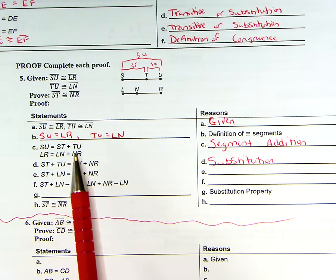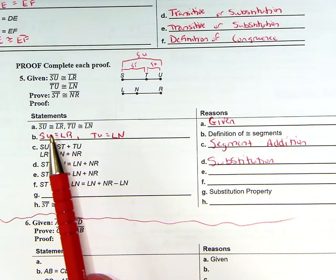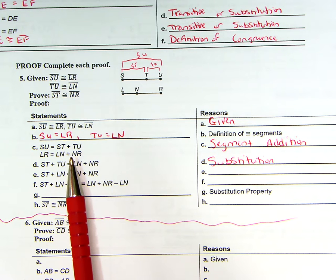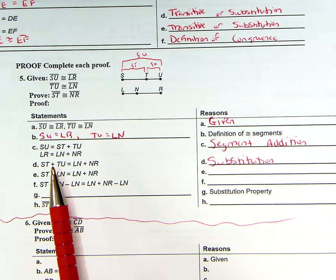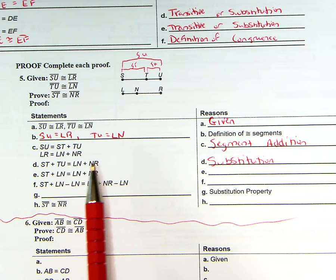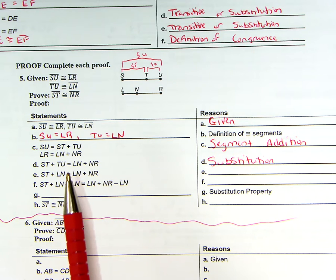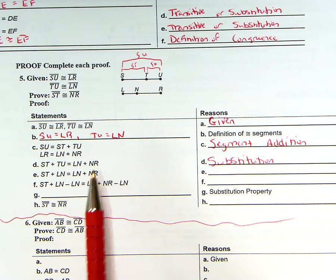LR equals LN plus NR, and LR is right here. We can substitute LN plus NR for LR right here. That is how we got this equation now, ST plus TU, which is equal to LN plus NR.